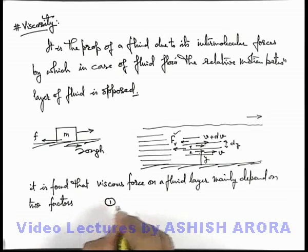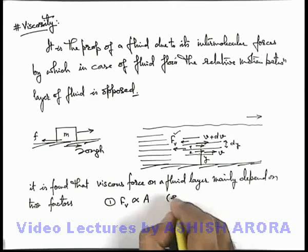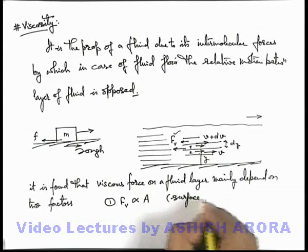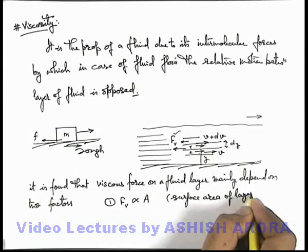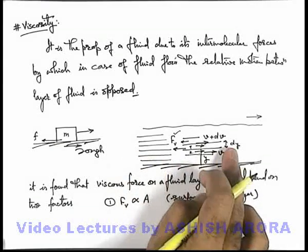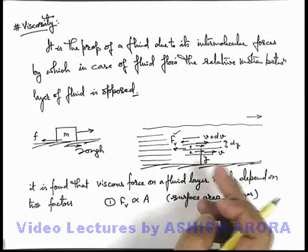Number one is this viscous force is directly proportional to the area of this layer, which we can write as surface area of layer. If the layer surface area is large, the viscous friction is large because of more intermolecular interaction between the layers.